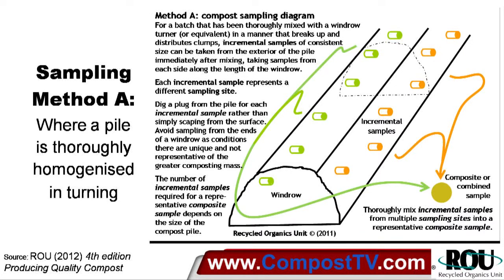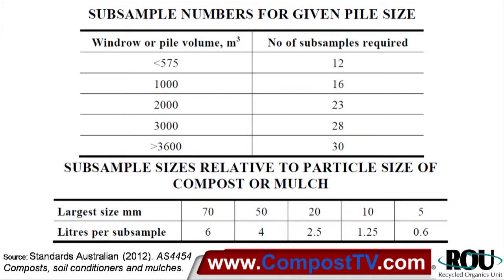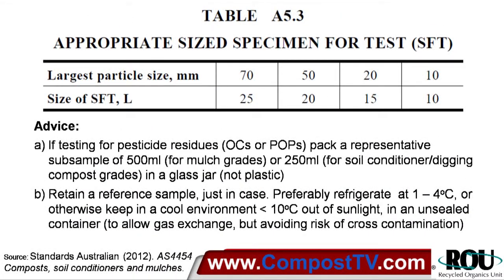You can't just grab a sample from anywhere in the pile and hope it's representative of the pile as a whole. The sample for testing needs to be a statistically valid and representative sample of the entire mass of material, with incremental samples of a suitable size taken from a large enough number of sampling sites in a manner that avoids bias. These incremental samples are then mixed to form a representative composite sample, which best represents material of average characteristics for the entire pile. A representative sub-sample for tests can then be obtained from that composite. For this pile with a nominal particle size of up to about 50 millimetres, we only need a representative sample of about 20 litres to conduct the full range of tests.